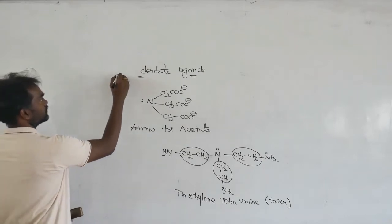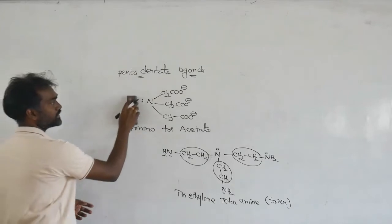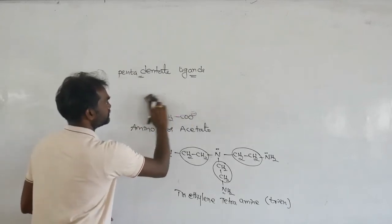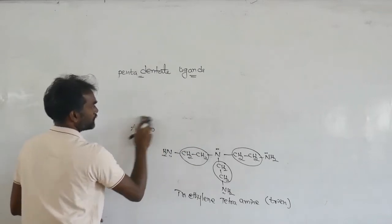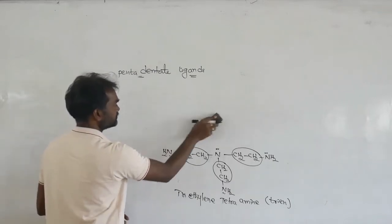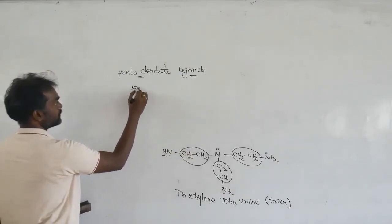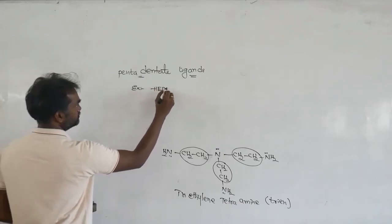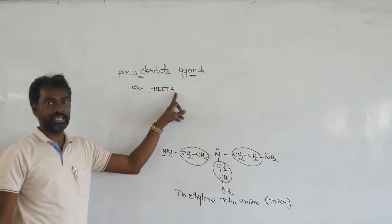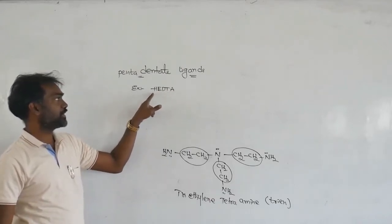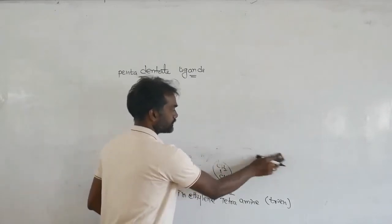Next is pentadentate — penta means five. So five lone pairs are donated. A famous example is HEDTA. HEDTA is basically EDTA where one side is occupied by an H, meaning one donor site is blocked. That is why it becomes pentadentate instead of hexadentate.